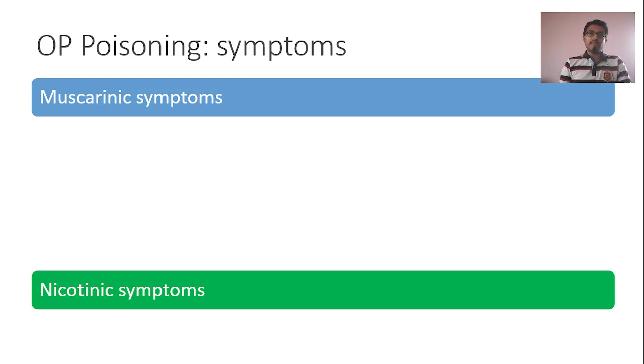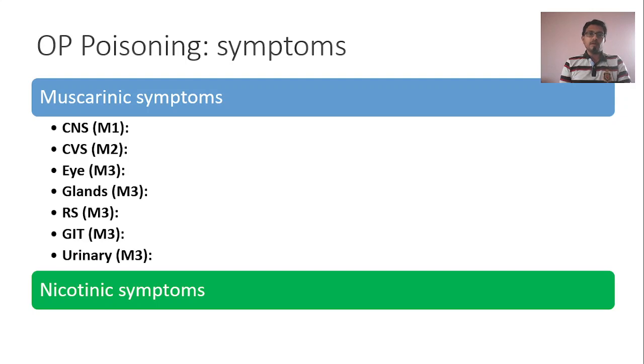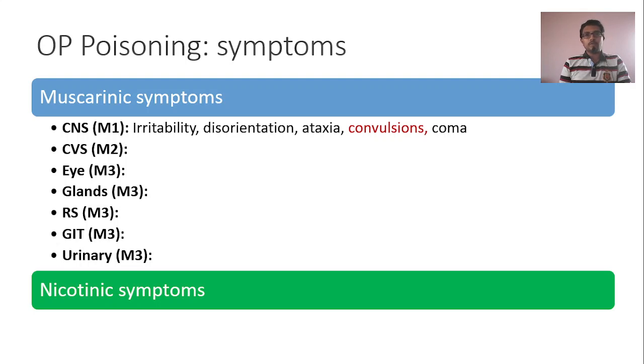Looking at the muscarinic symptoms by receptor: M1 acts on the CNS. There will be excitation, irritability, disorientation, ataxia, convulsions, and coma.